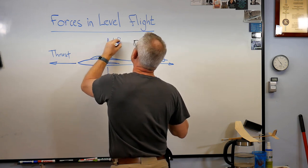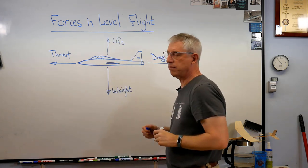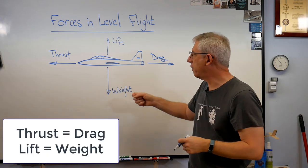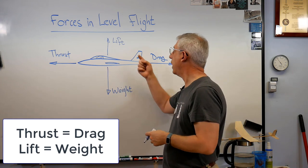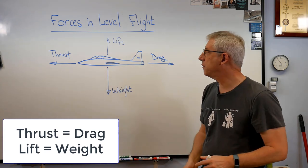And the last thing is lift. That's what makes the plane want to fly. That's the upward force that counteracts weight. When all of these are in balance, when the thrust equals the drag and the lift equals the weight, you're in unaccelerated flight.